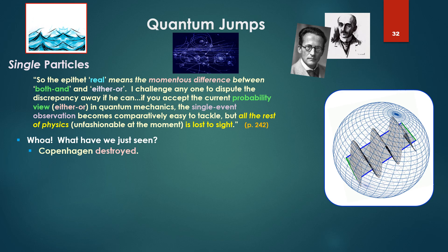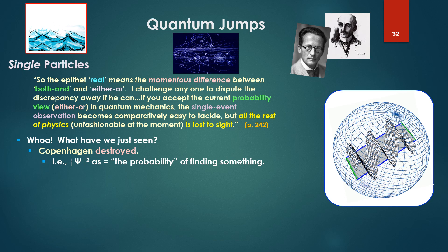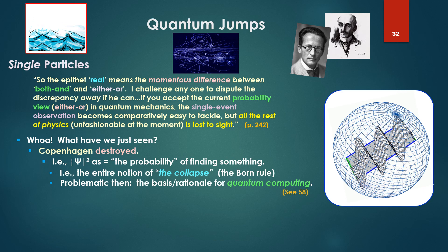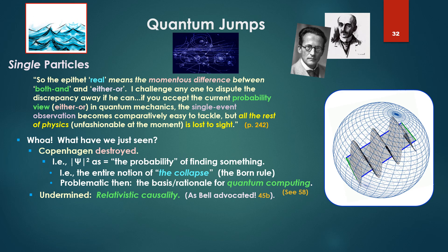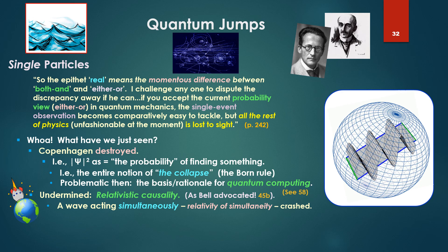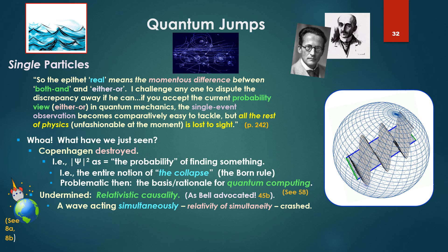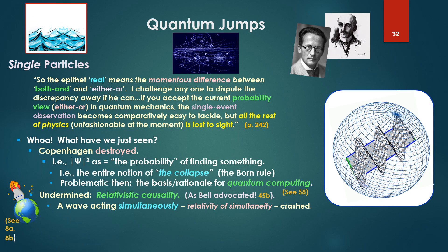So what have we just seen? In my opinion, Copenhagen destroyed. That is, taking the square of the wave function as the probability of finding something, the location of a particle. That is, the entire notion of the collapse, the Born rule. Problematic, then, the basis or rationale for quantum computing. Undermined: relativistic causality. Just as Bell advocated it should be, as we noted in 45b. Remember, Schrödinger's wave acting simultaneously throughout the region. So, that implies the relativity of simultaneity is equally destroyed, crashed. Just as we've been arguing, or I've been arguing in my discussions of relativity, that has no reality.